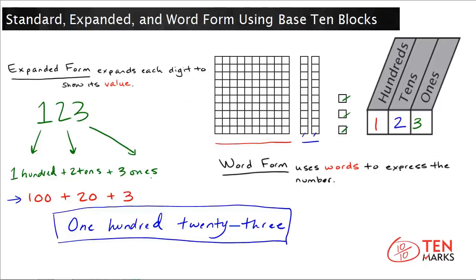Now notice, even though in the expanded form up here, you have ones with an s or tens with an s, you don't use the plural version when you write the number here. You don't say twenties or threes. You use the singular version of the word every time you go to write the number in word form.